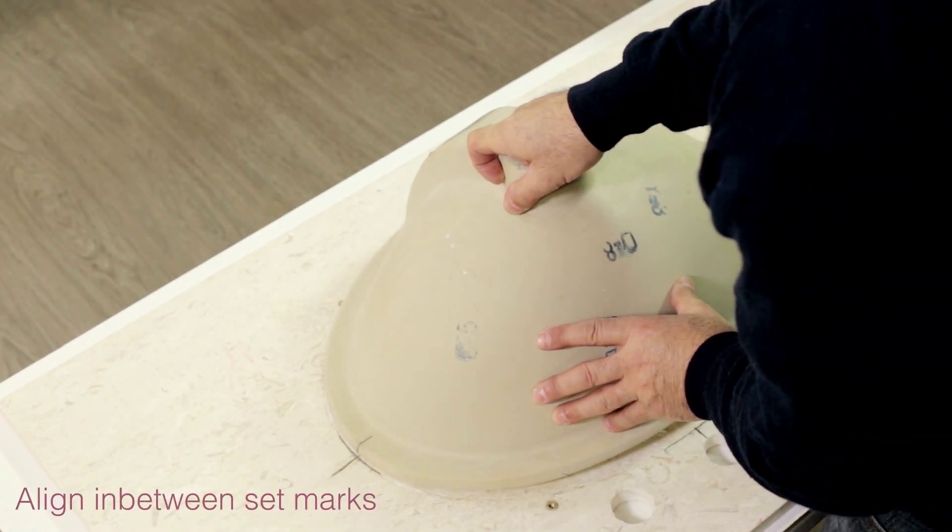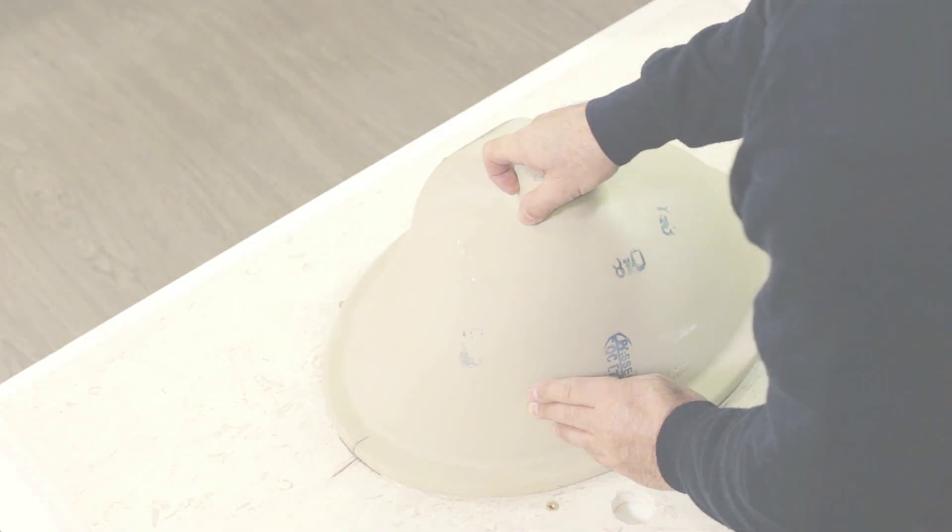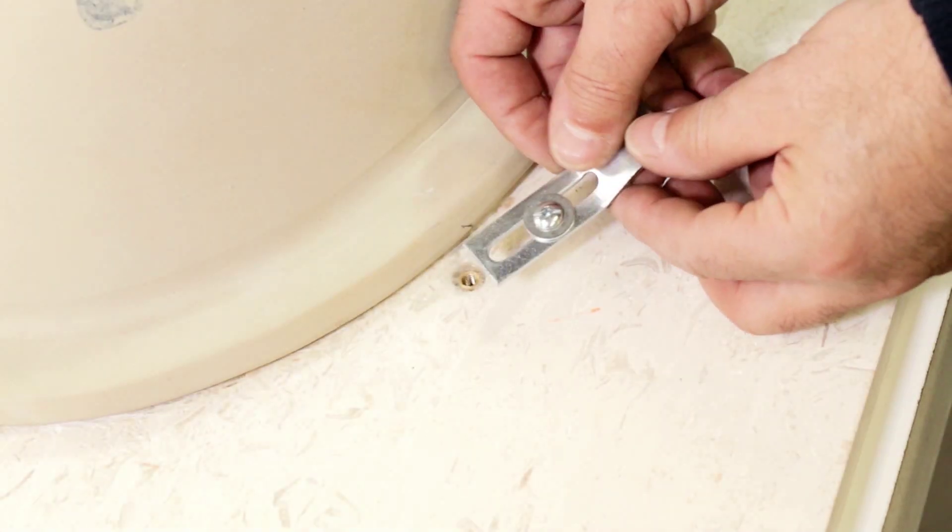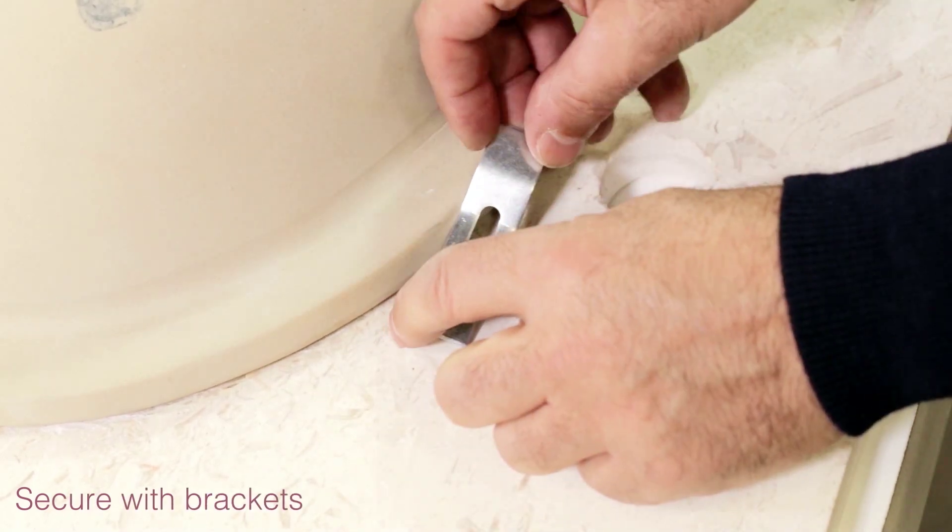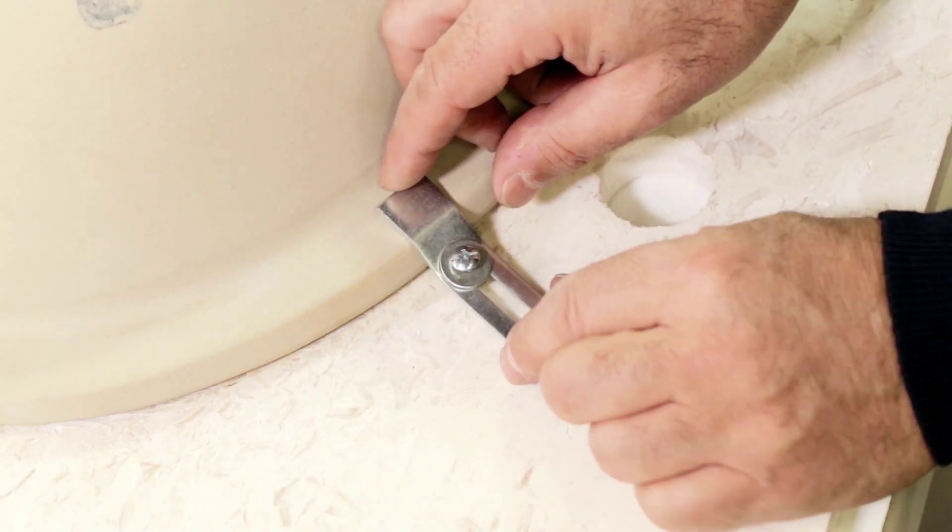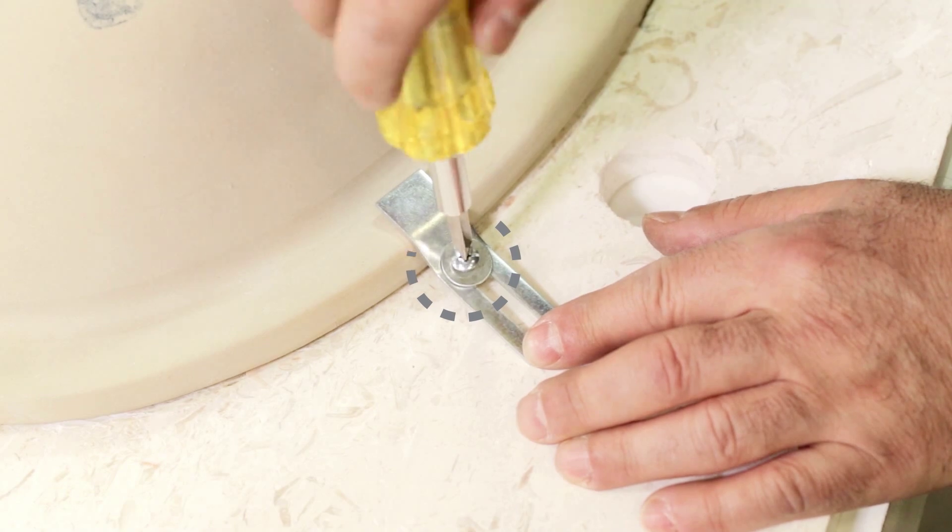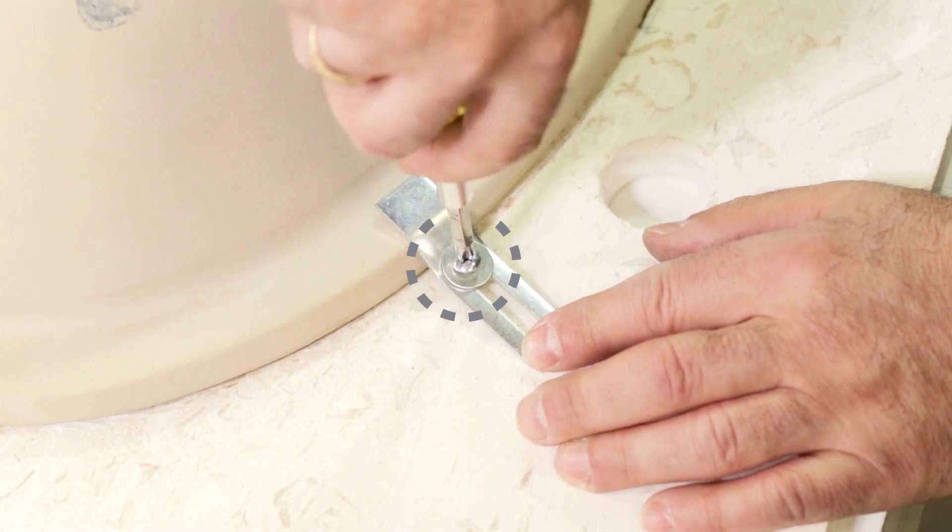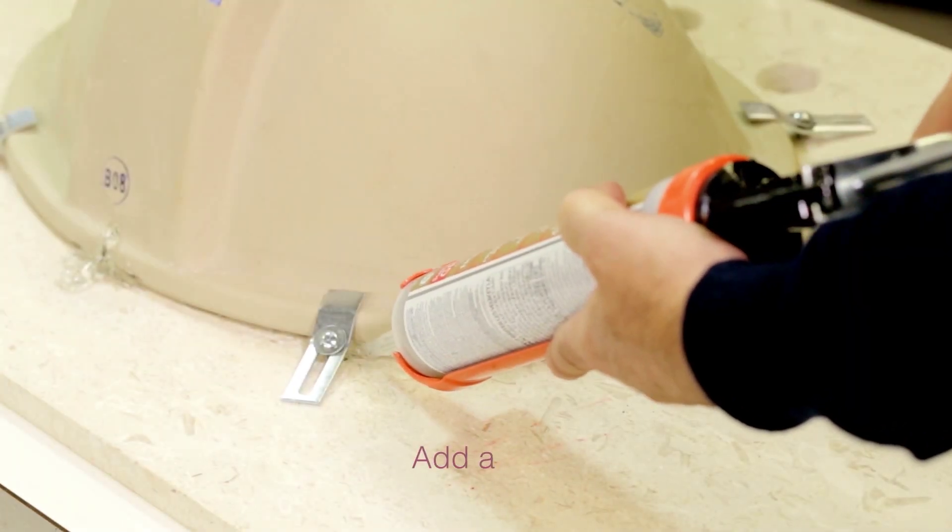Secure the sink using the included brackets. With a Phillips screwdriver, screw the brackets into the preset anchors and tighten accordingly. Do not overtighten. Apply another bead of silicone around the sink, securing it to the vanity top.